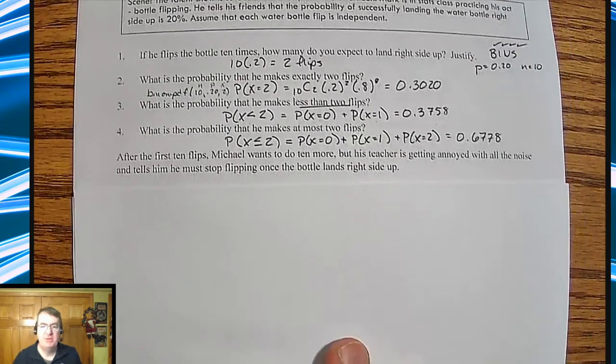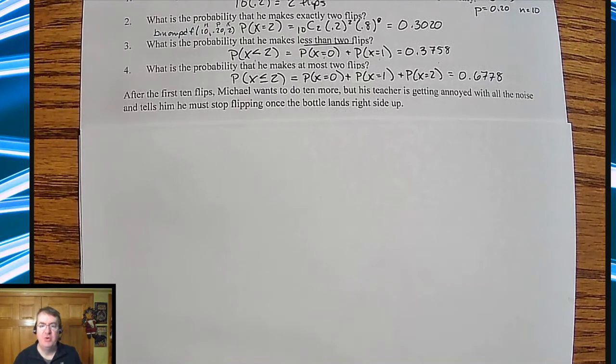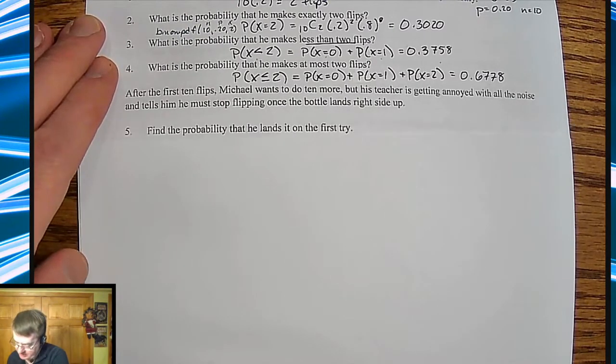So then after the first 10 flips, Michael wants to do more, but his teacher is getting annoyed with all of the noise. So he tells him to stop flipping once he lands it. So now this is a little different. Instead of having a set number of things, you're going to go until you make it. And so that's kind of actually what we're trying to set up here from this last section of chapter six.